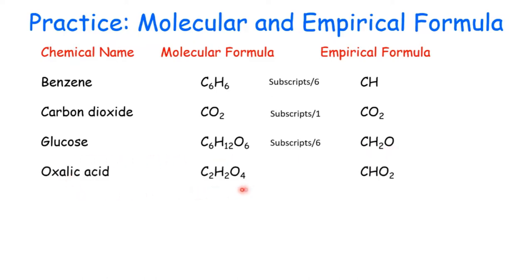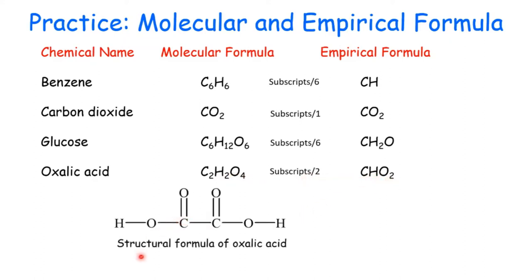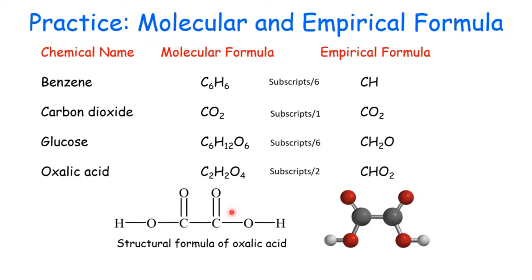Oxalic acid: divide everything by 2, you have CHO2. We talked about the structural formula in the previous slide. If you just look at the molecular formula, it doesn't show how atoms are connected — you cannot see that each carbon connects to one oxygen with a double bond. But with the structural formula, you can see a bit more detail. Still, the structural formula is not the actual 3D model for oxalic acid; it looks like a 180-degree line structure, but the actual geometry involves bent structures around the carbon-oxygen bonds.